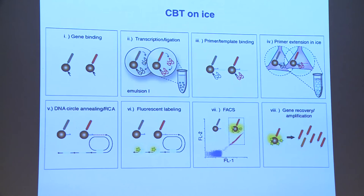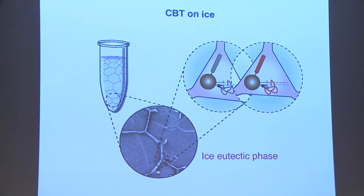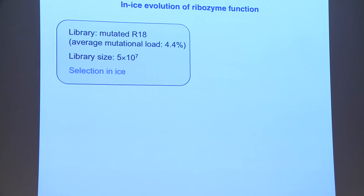The next question we asked: we can synthesize RNA in ice, but what about evolution? To do that, we simply replaced the second emulsion step in our selection protocol by freezing — instead of encapsulating the clonal beads into aqueous droplets in an oil phase, we enclosed them into the eutectic phase pockets in the ice and carried through our selection procedure.